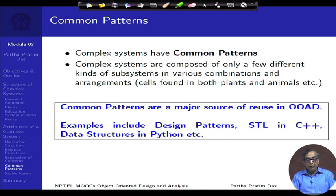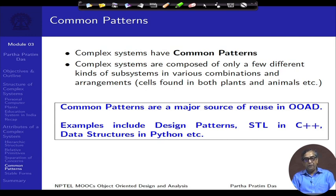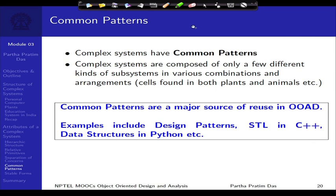Common patterns are a major source of reuse — something built for one purpose can be engaged for another. This reuse becomes possible because there are common patterns. For example, you have standard libraries in C, the template library in C++, design patterns, and common data structures in Python. These are all examples of common patterns that occur across domains and systems, and allow us to make reusable solutions using object oriented analysis and design. This is the fourth critical attribute of complex systems.